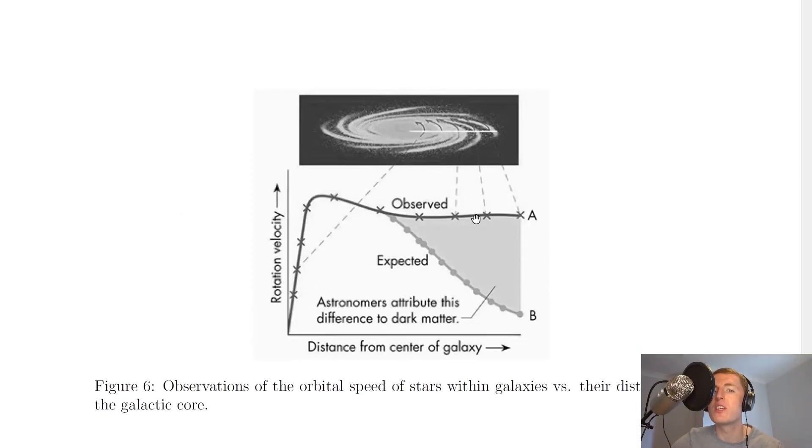So here is the graph showing you this anomaly, this difference between what we expect and what is actually observed. So here's rotation velocity of the stars against distance from the galactic centre.